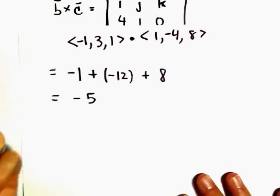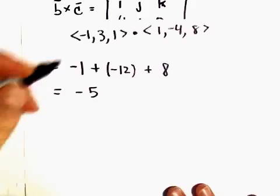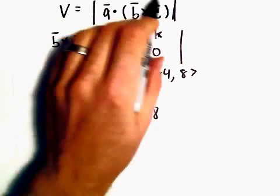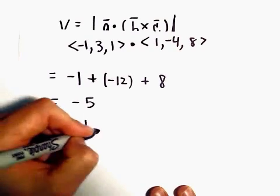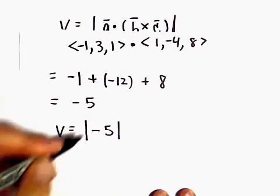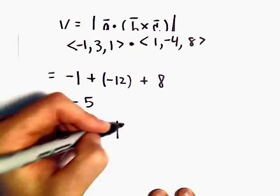And the last thing we have to do is take the magnitude. The volume is going to equal the magnitude, or you can think about it as the absolute value of -5. That's just going to leave us with positive 5, and that will be our solution.